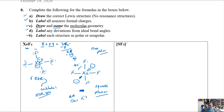Just to clarify the polarity: even if the Xe–F bonds had some polarity, each bond is directly opposite another, so dipoles cancel. There's no net polarity for XeF4. That's confirmed by the square planar, perfectly symmetrical arrangement.